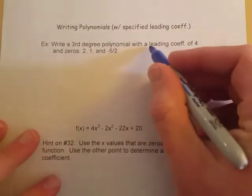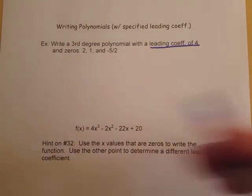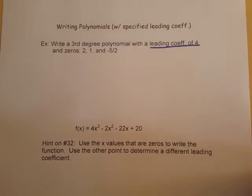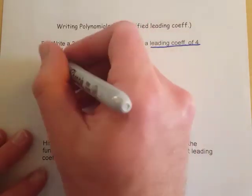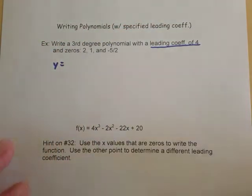Now this leading coefficient of 4 is a piece that we're going to have to take care of later on in the problem. But for now let's just ignore that part of the problem and set it up as we would any other polynomial we'd be writing with the factors. Here's how I'd like to start this - I'm going to leave a little bit of space so that I can include some other stuff later on.